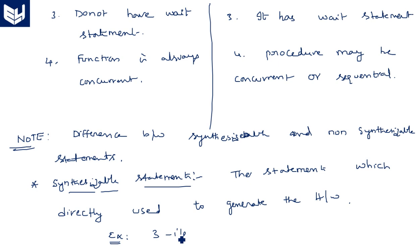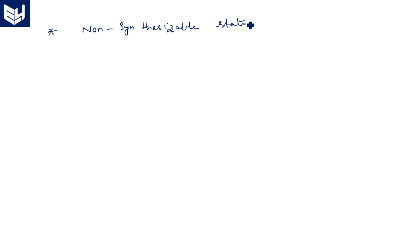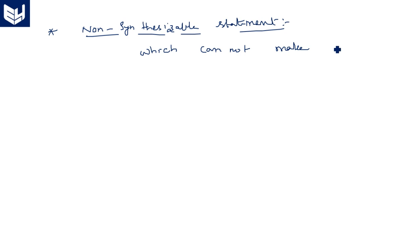An example of a synthesizable statement is a three-input NAND gate. Non-synthesizable statements, on the other hand, cannot make any hardware. In synthesizable code, after execution we have a hardware architecture for the written description, but in non-synthesizable statements we will not have any hardware architecture.